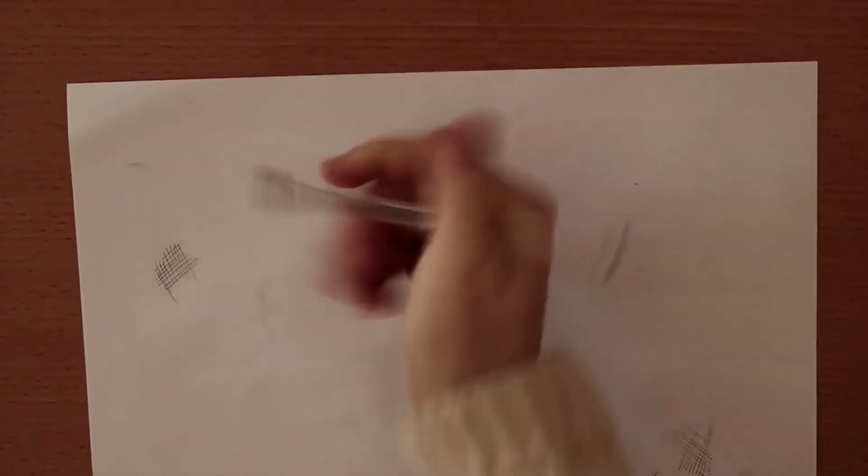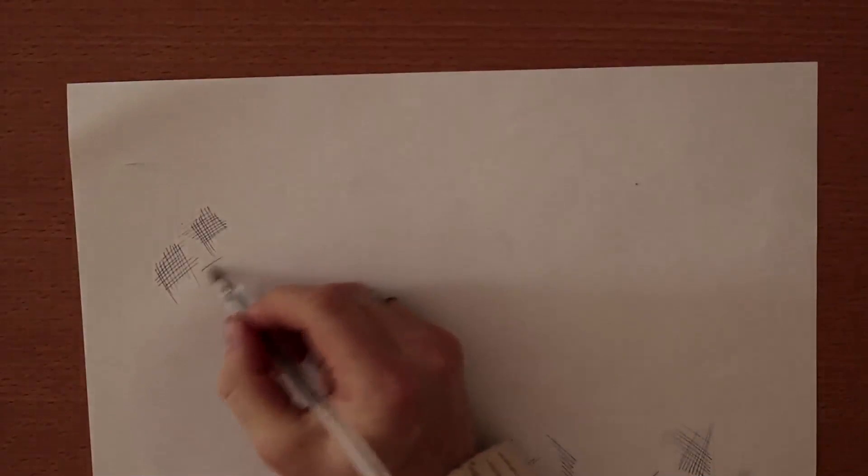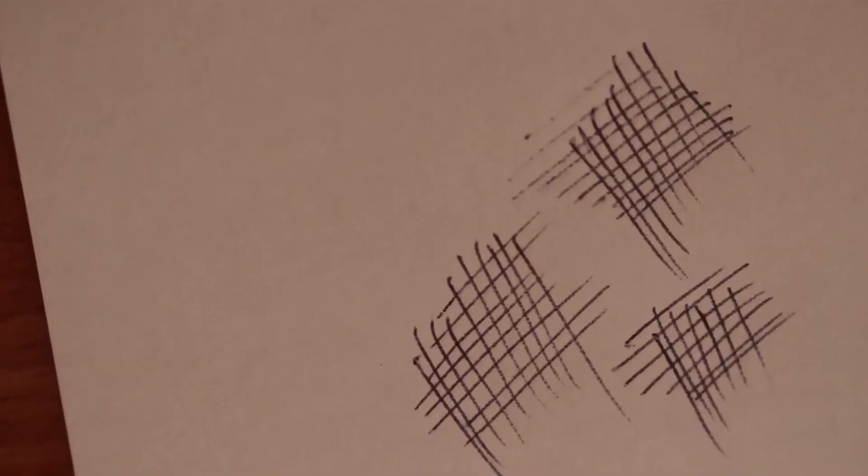Firstly we have cross-hatching which is one of the easiest ways to keep your shading light while using a biro and that just consists of interspersed straight lines.